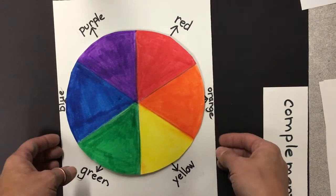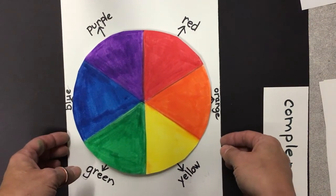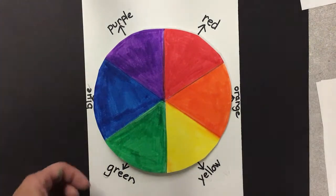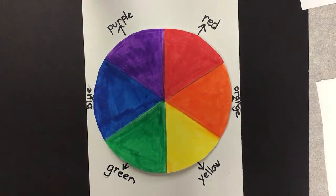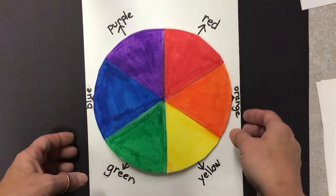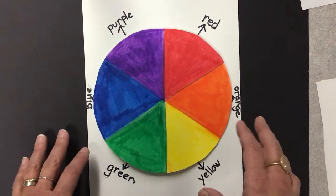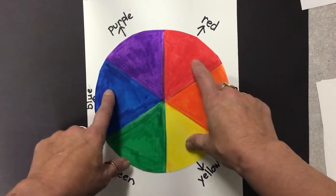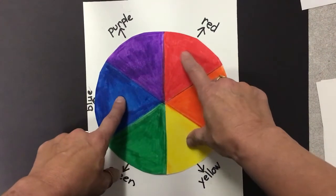Complementary colors are colors that are opposite each other on the color wheel. I know in the video they didn't talk too much about complementary colors, but they did a nice review of the color wheel. So we know that we have three primary colors: blue, red, and yellow.